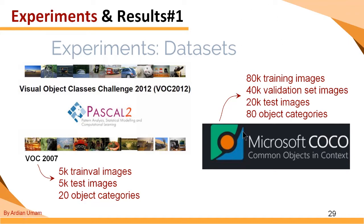Microsoft COCO has a large number of training datasets compared to Pascal. Microsoft COCO has 80 object categories, whereas Pascal only has 20 object categories. So Microsoft COCO is a superset of Pascal, because all objects in Pascal are also present in Microsoft COCO.